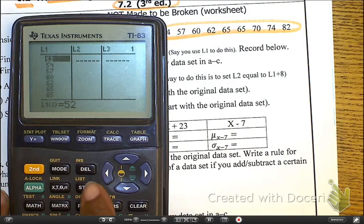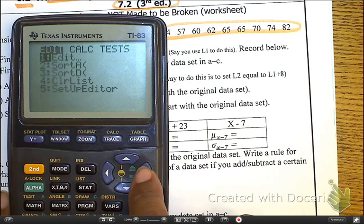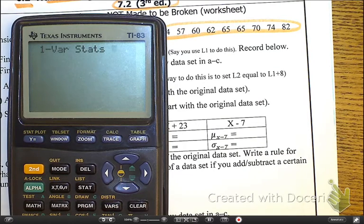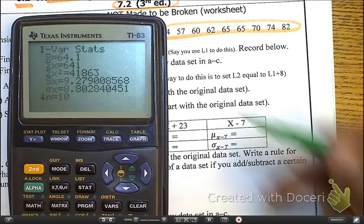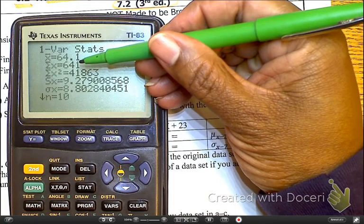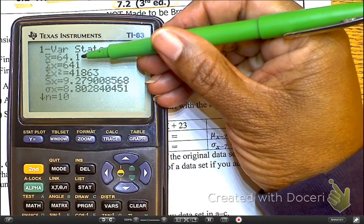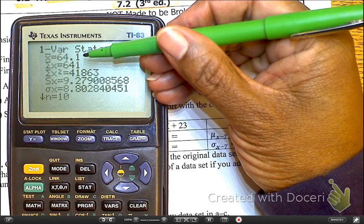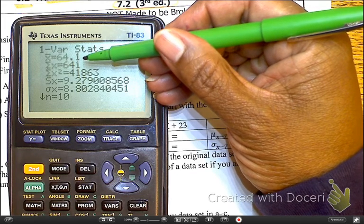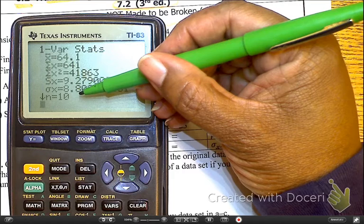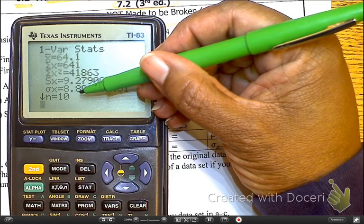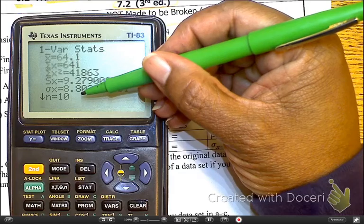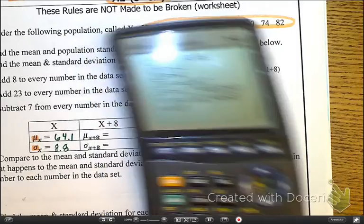Then I go to Stat, over to Calc. You can see 1-Var Stats right here. L1 is my default, and here are my values. I can see I have my mean. Yes, this is the mean of the sample, but it's understood we're going to have a large enough sample size that we can use this same one for the mean of the population. Then we have the standard deviation of the population, 9.8. Let's write that down on our chart.